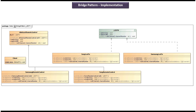This is the class diagram of the scenario we just discussed. Here you can see the interface LED TV, which has three abstract methods: switch on, switch off, and set channel. This LED TV interface is implemented by two concrete classes — the first is Sony LED TV and the second is Samsung LED TV. Both of these concrete classes provide implementations of switch on, switch off, and set channel.